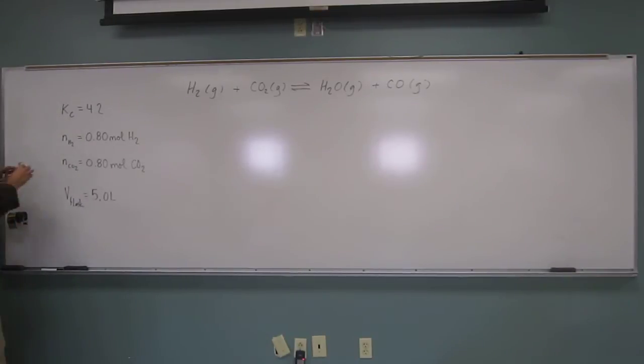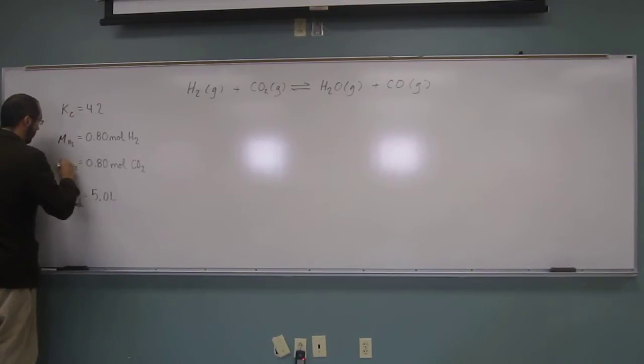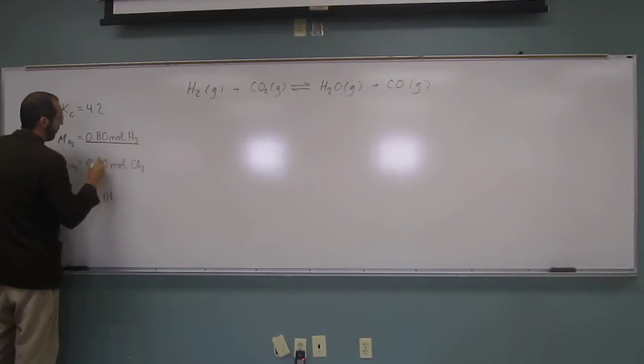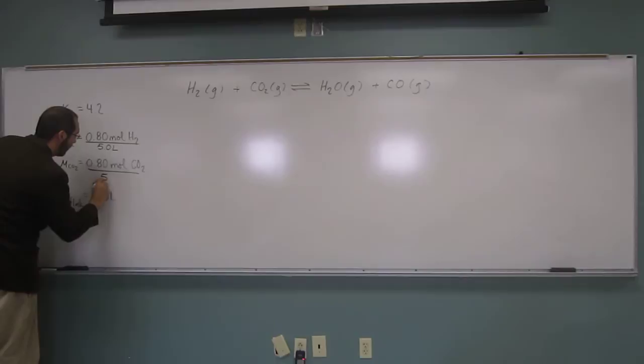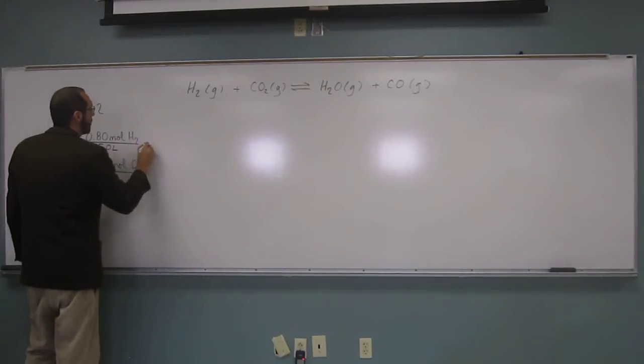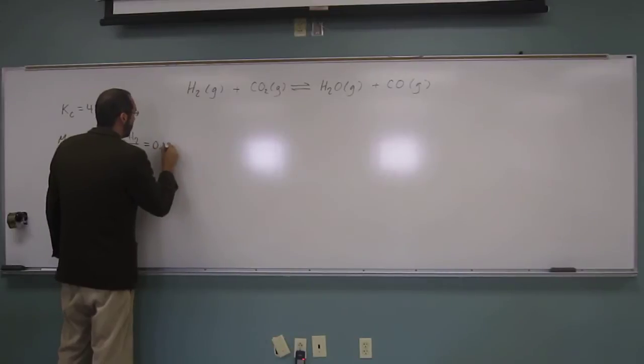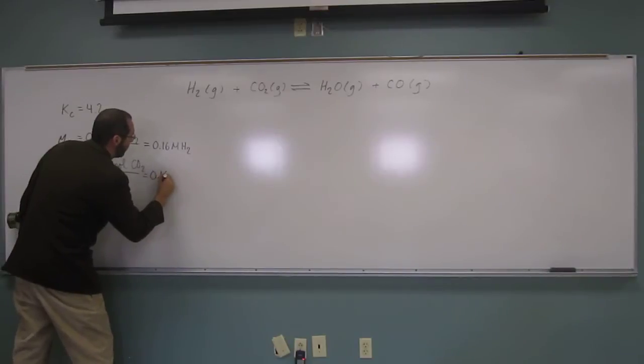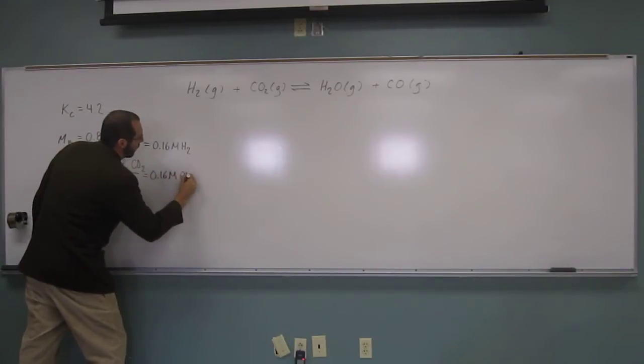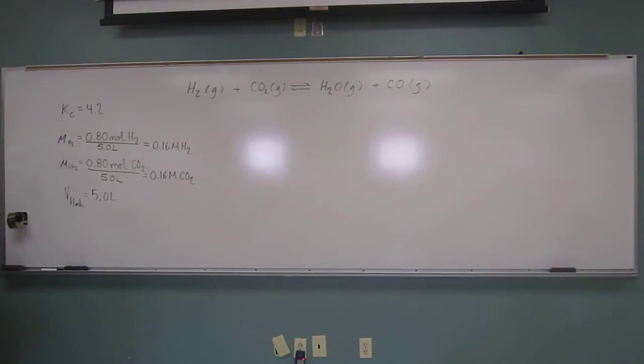Well, let's take these N's and replace them with M's and fill them for molarity. So what's the molarity? It's going to be the number of moles divided by the flask volume. Okay, so when we do that, we're going to get 0.16 molar hydrogen and 0.16 molar carbon dioxide. Is everybody okay with doing that first one?